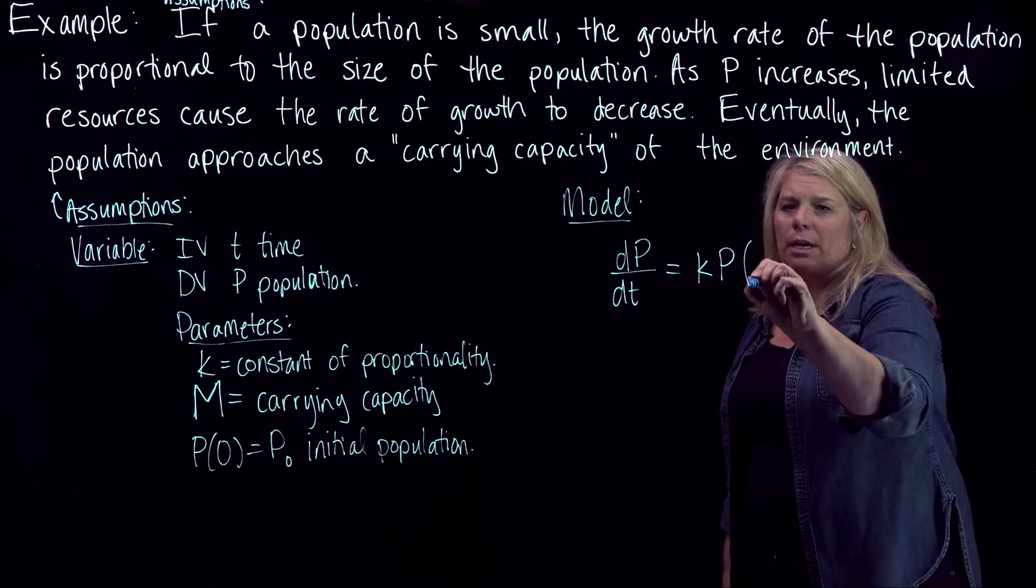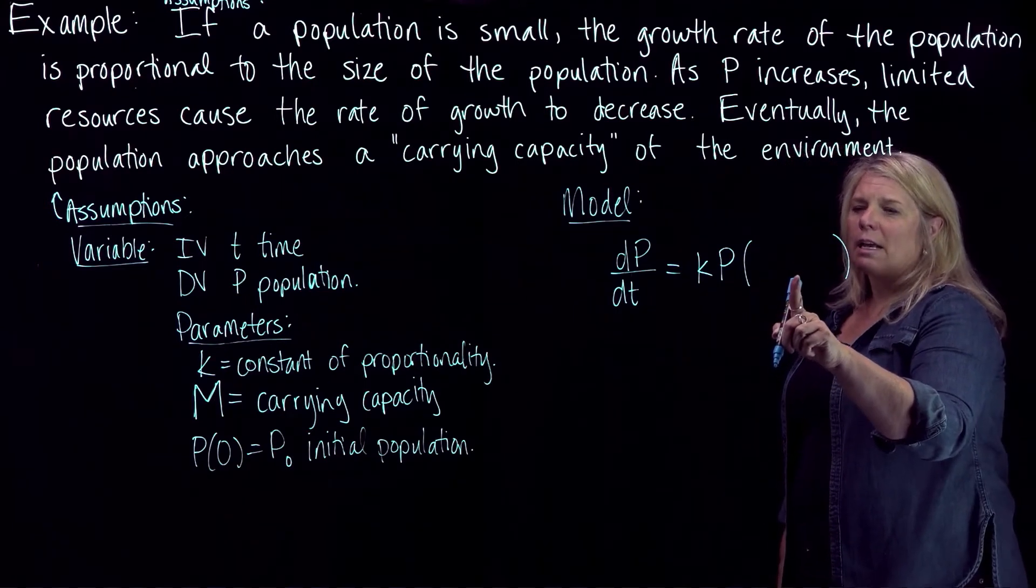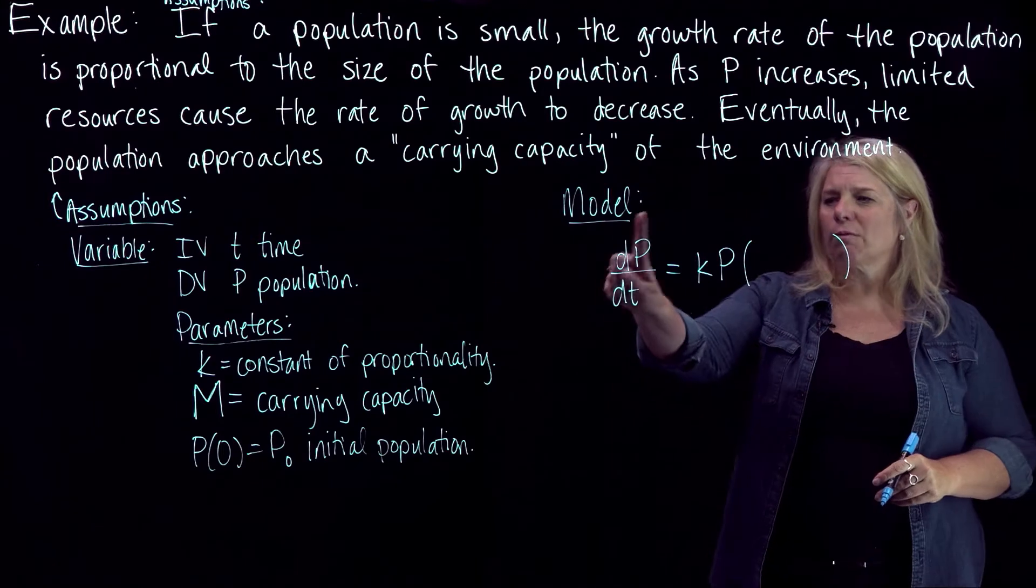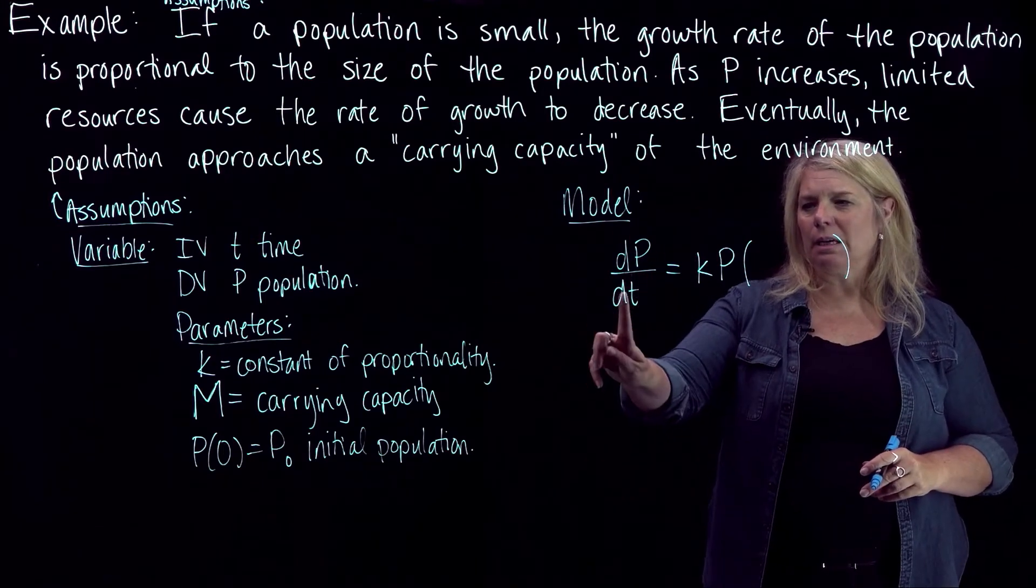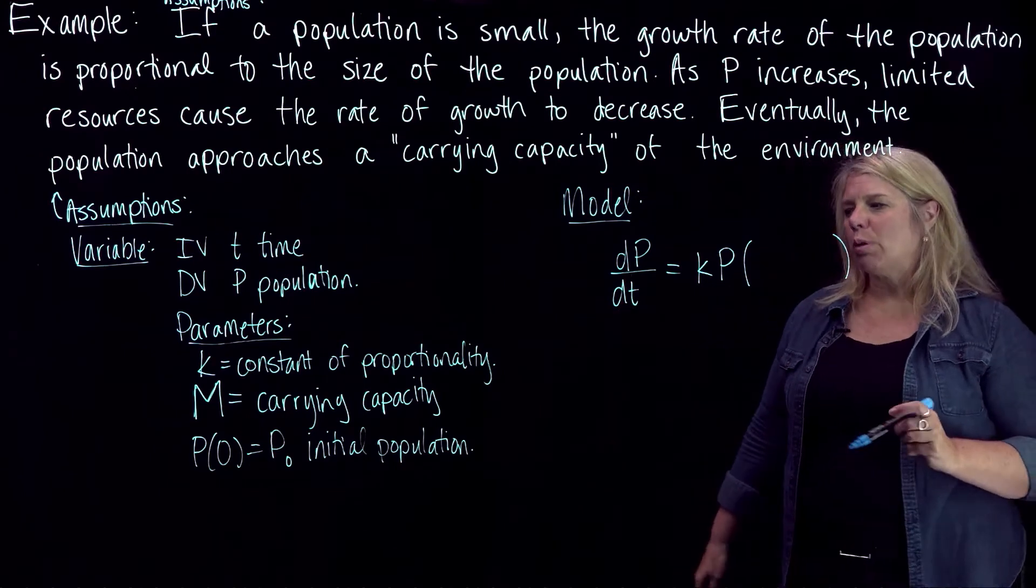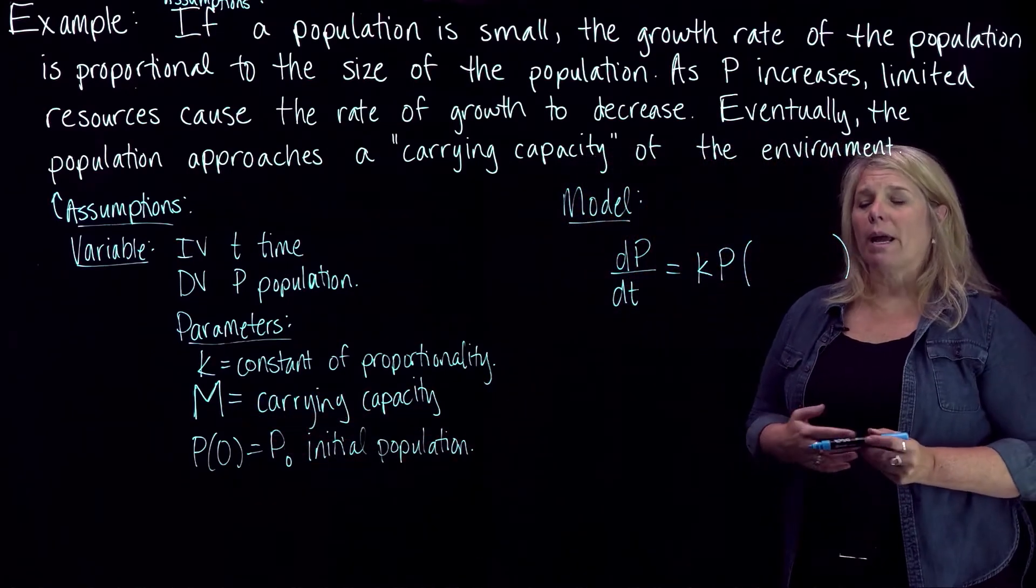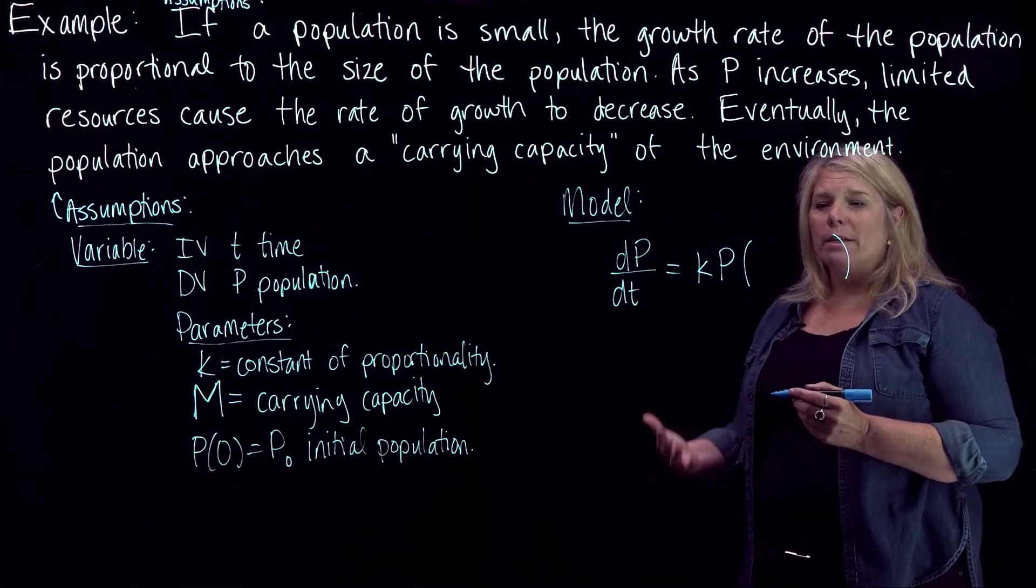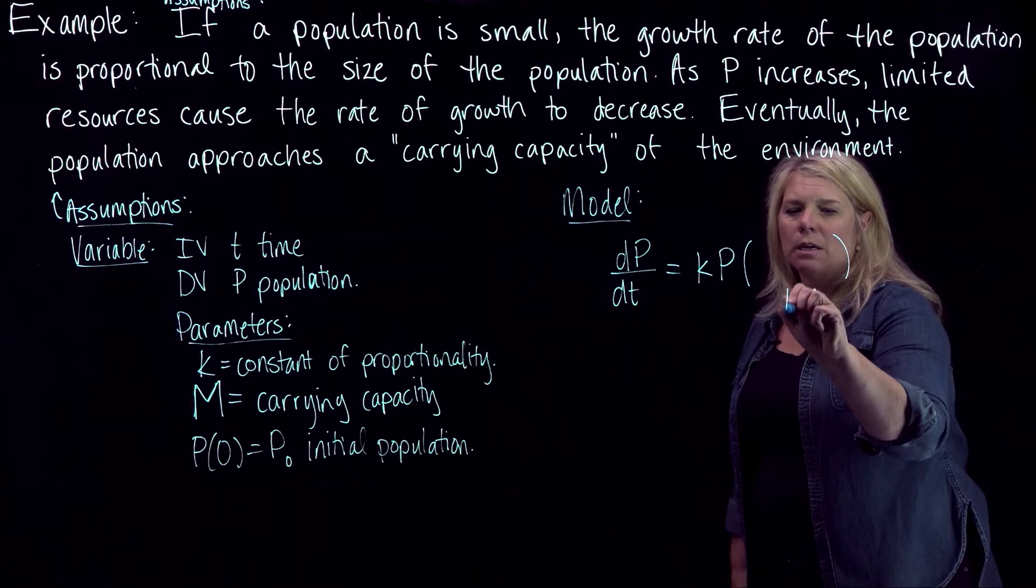So what I would like to do here is create a factor here that establishes that this rate will get smaller at this rate, this dP/dt will get smaller when P gets closer to this value of M. And there are several ways to do that. One way to do that though is to think about some kind of factor here that we want to be small.